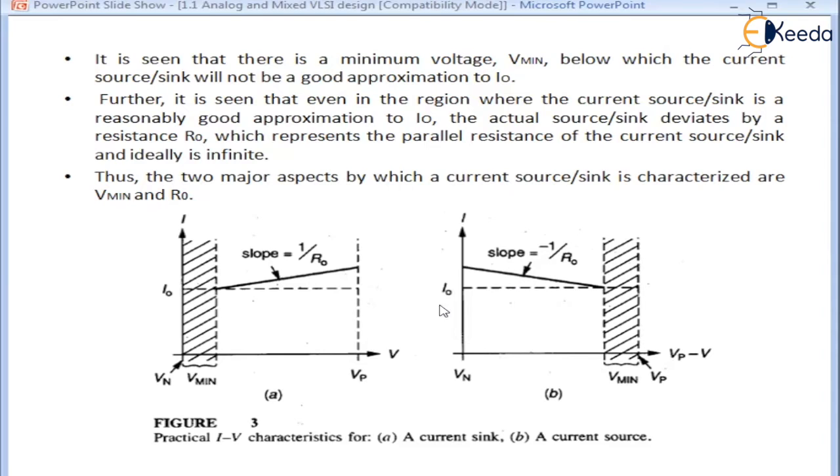The two major aspects by which any current source or sink is characterized are Vmin and R0. Vmin is the voltage below which it is not a good approximation, and R0 is the resistance which it offers when it is a good approximation.